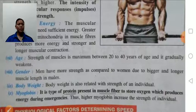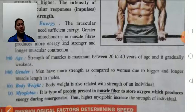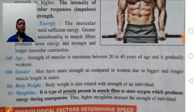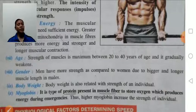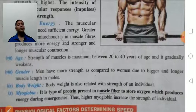Myoglobin is a type of protein present in muscle fibers that stores oxygen to produce energy during emergency situations. Myoglobin helps in the production of energy during emergency. The higher the myoglobin, the more strength there will be.